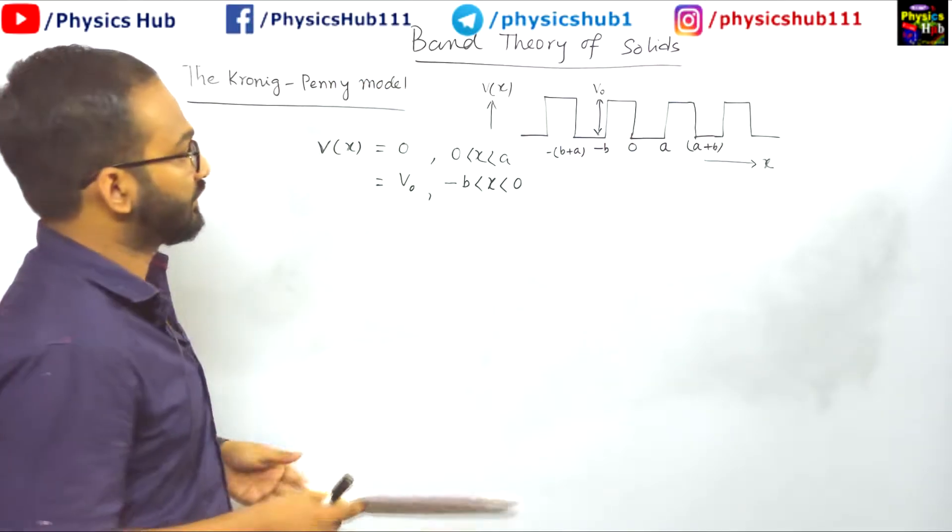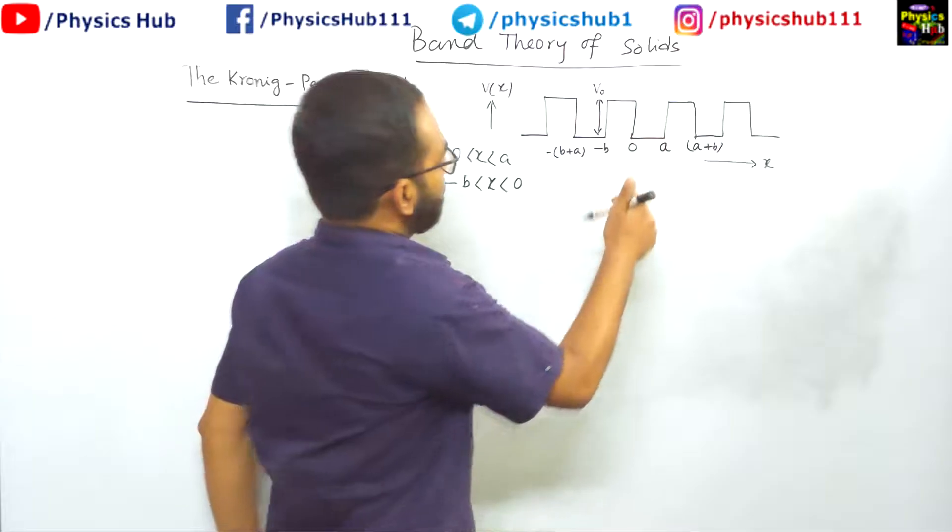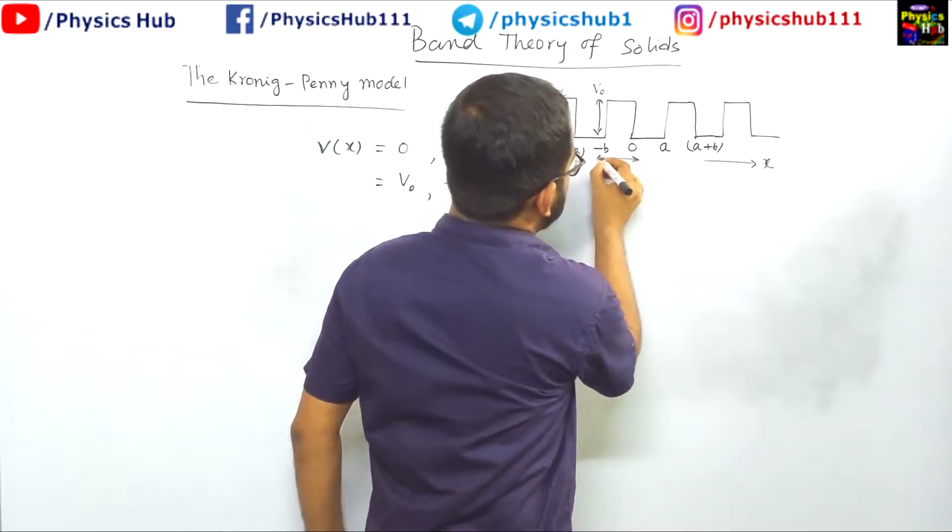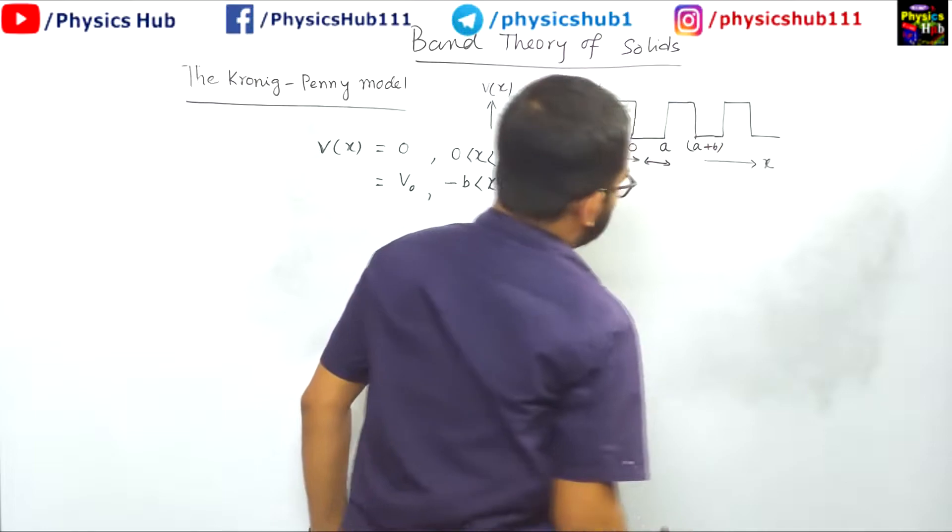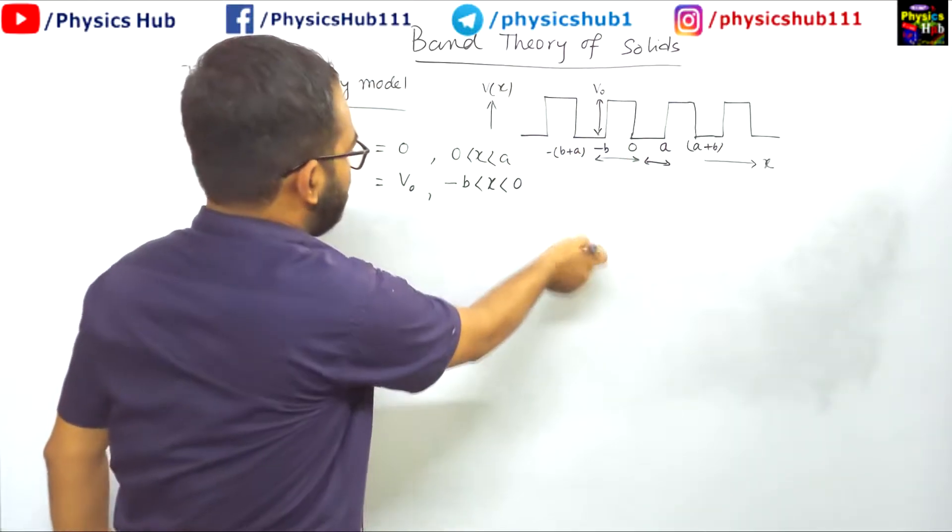So for this potential let us write the Schrödinger equation in these two regions. Firstly we will write the Schrödinger equation in this region minus B to 0 and then from 0 to A. So first write for 0 to A.